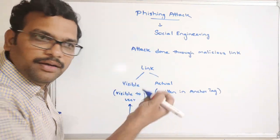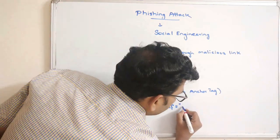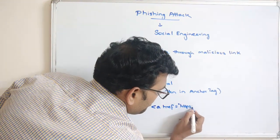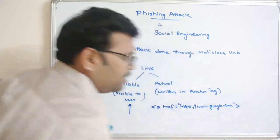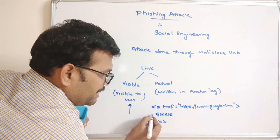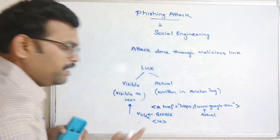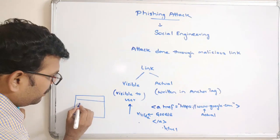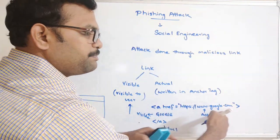Let's write a simple link as an example. I'll write an anchor tag: href equals https://www.google.com — this is the actual link written in the anchor tag. The visible text will be 'Google'. If we save this as a .html file, we get a webpage with a small text 'Google', and when the user clicks on it, it will be redirected to that website. This is a legitimate case.